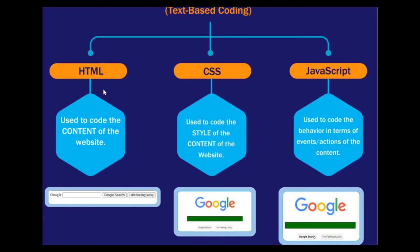Just like we used to fill text inputs and labels in block-based coding, HTML will do the same thing — but not by clicking on a text input and going to the design component. We have a particular code with a syntax. HTML is used to code the content, CSS is used to code the style such as font weight, font color, font style, and JavaScript is used to code the behavior in terms of actions or events.